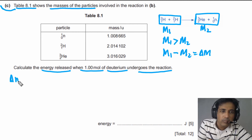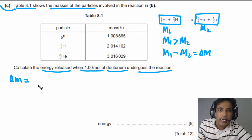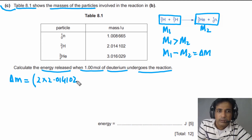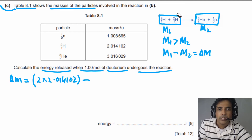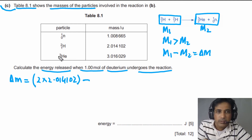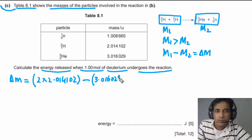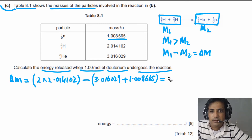We calculate the mass difference (mass defect): 2 × 2.014102 u (mass of two deuterium nuclei) minus (3.016029 + 1.008665) u (mass of helium nucleus plus neutron). The mass defect equals 0.00351 u.